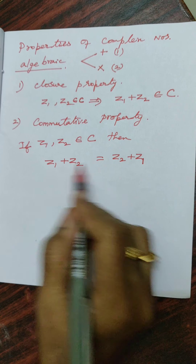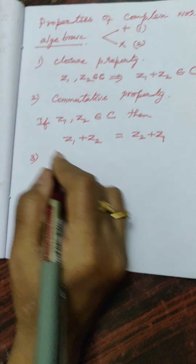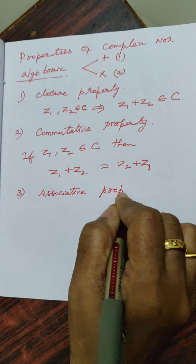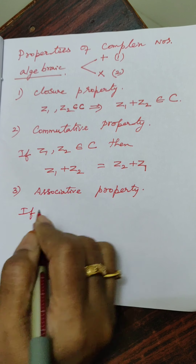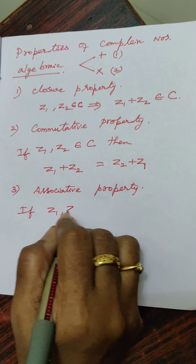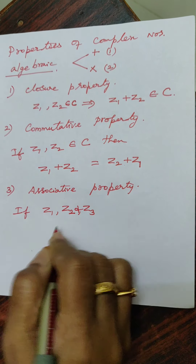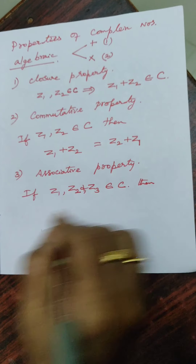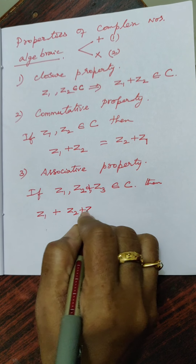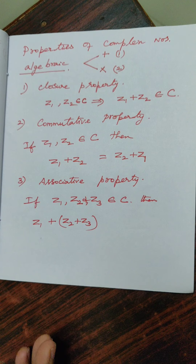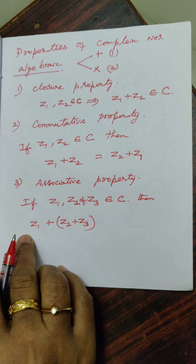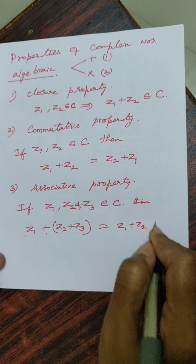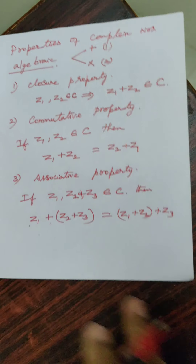The third property is Associative property. In Associative property, we need three complex numbers Z1, Z2, and Z3. The property states that (Z1 plus Z2) plus Z3 equals Z1 plus (Z2 plus Z3). We can change the bracket and the value will not change.